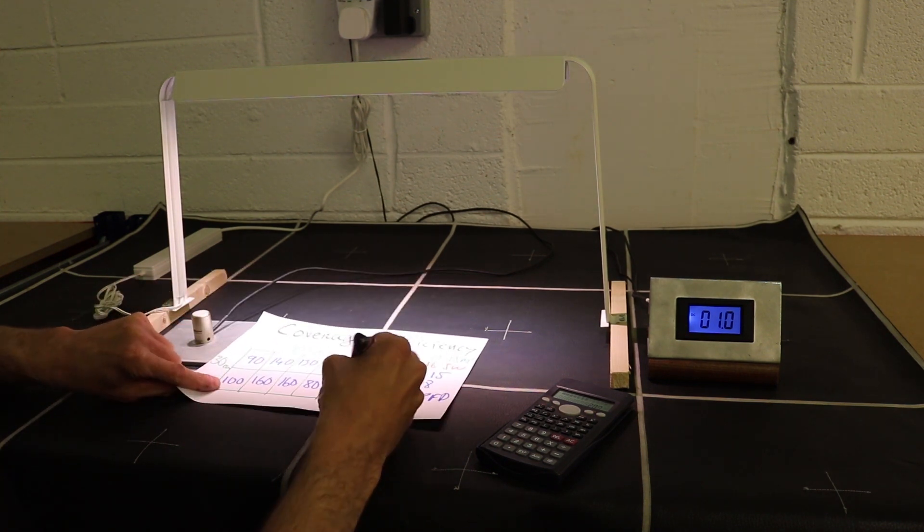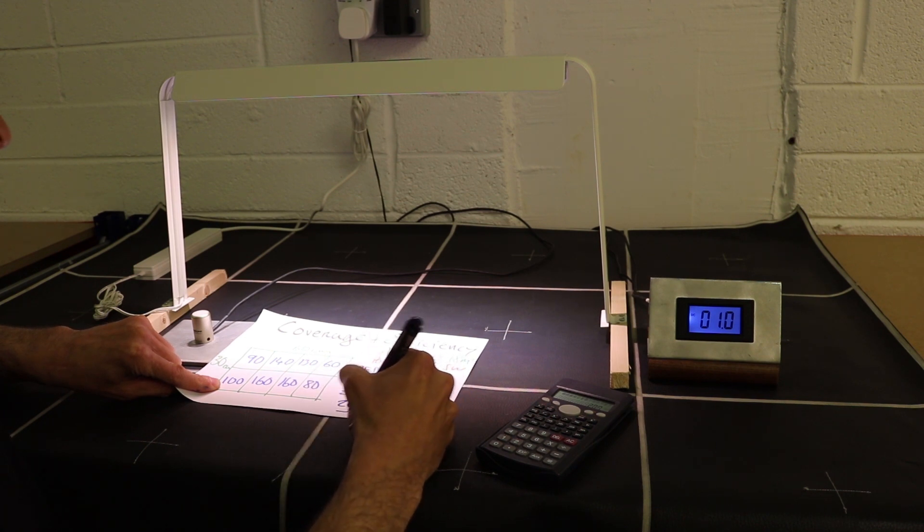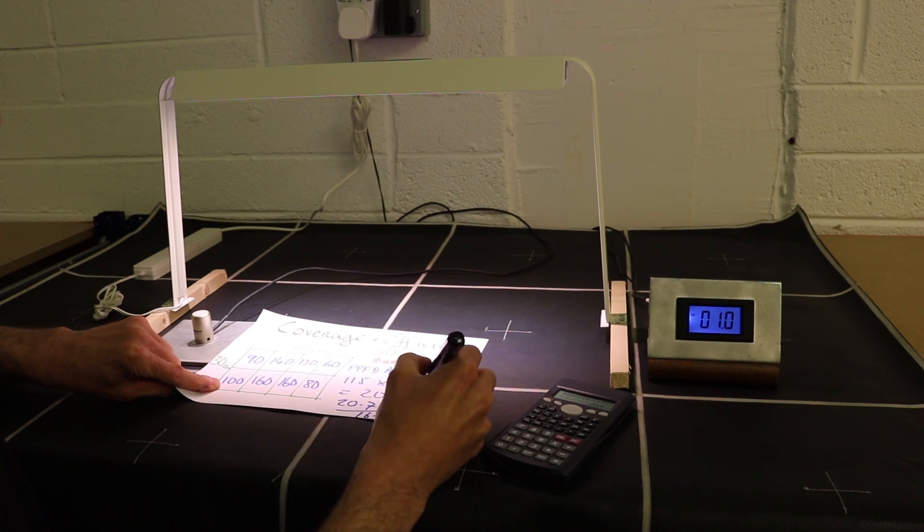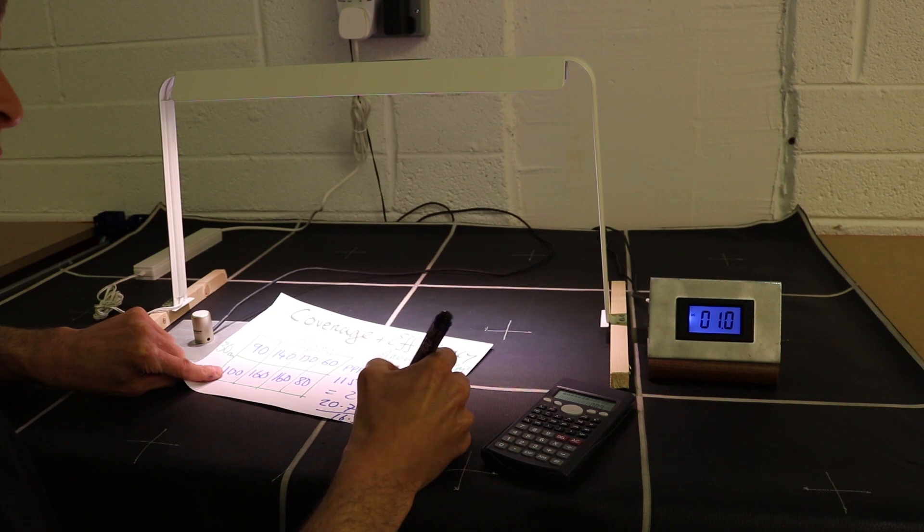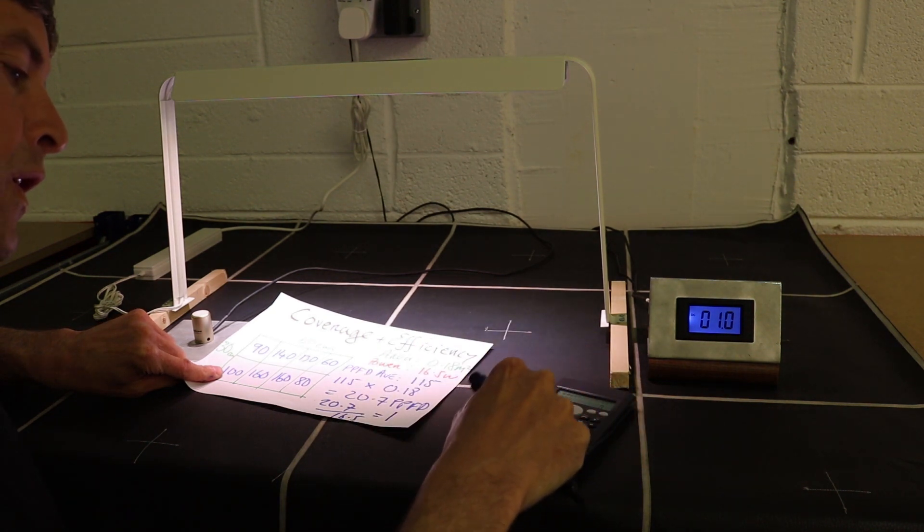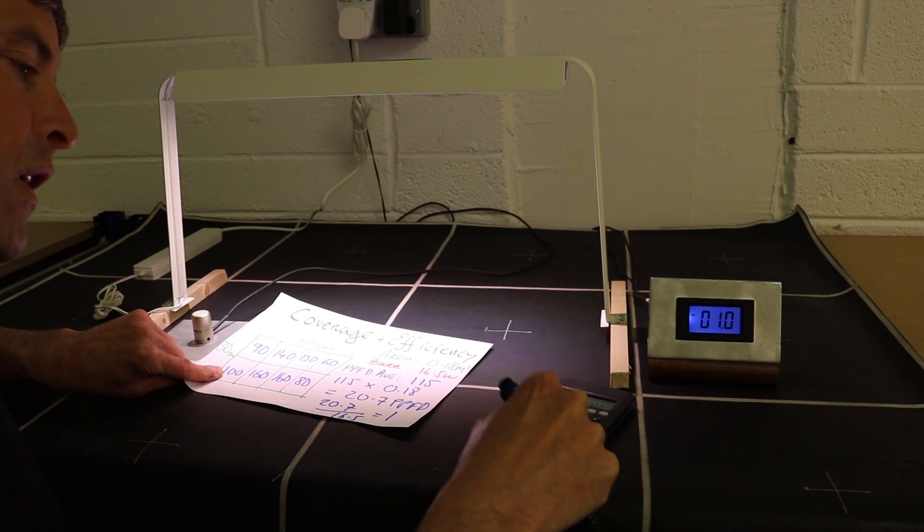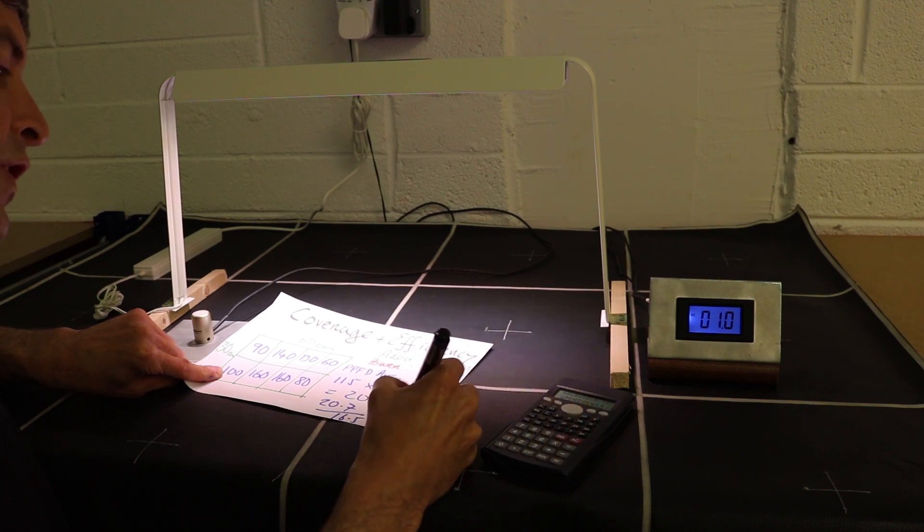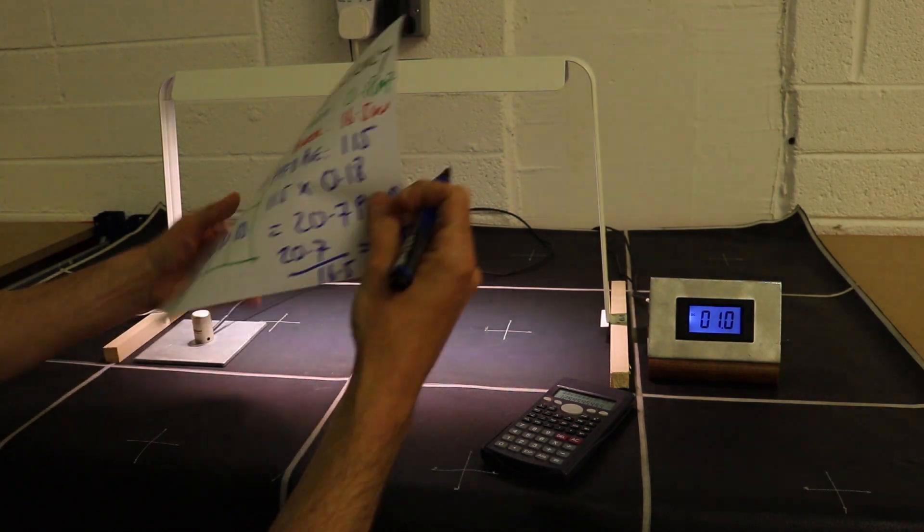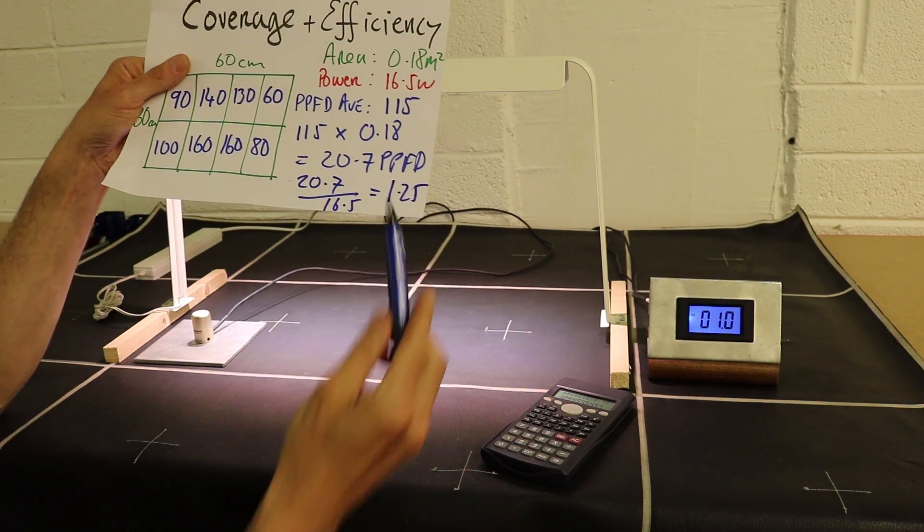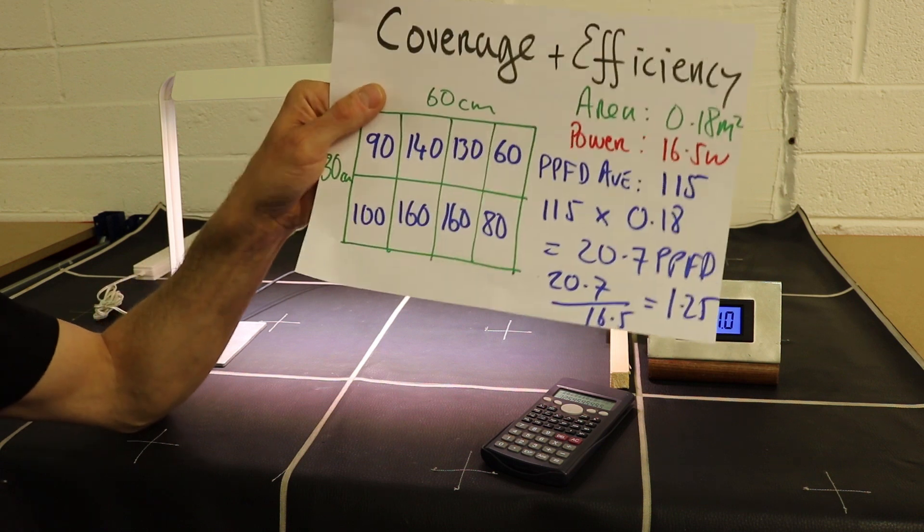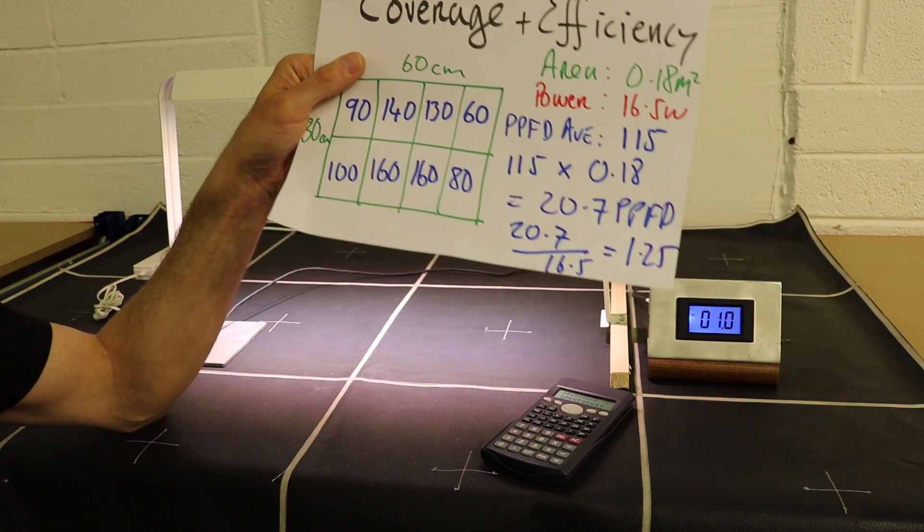And to get our efficiency, you divide the 20.7 by 16.5 watts and that equals 1.25. So the efficiency of this unit is 1.25 micromoles per watt, which is pretty good.